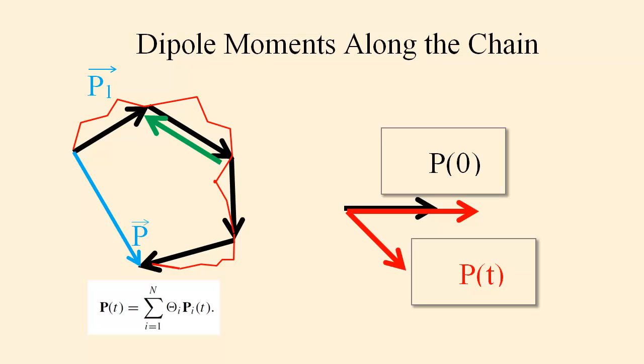However, there's a second way the polymer chain can change its dipole moment, indicated by the second red arrow, the one parallel to the black arrow. The second red arrow corresponds to the chain getting larger or smaller, chain breathing, while the dipole moment continues to point in the same direction. Chain breathing is an expansion and contraction mode. Chain rotation is rotational diffusion. There seem to be two different time-dependent processes that might contribute to the time dependence of P.